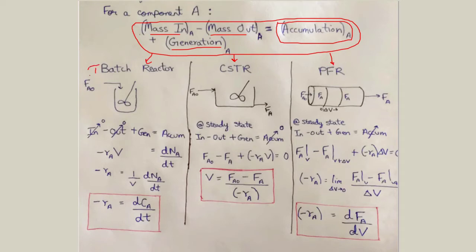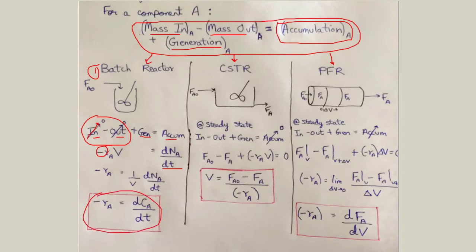Let's begin with the batch reactor. Using the component balance — in minus out plus generation equals accumulation — in a batch reactor we don't have any flow in or out, so those two terms become zero. The rate of generation equals the rate of accumulation, but since A is a reactant it gets consumed, hence the negative sign. Finally we get dCA/dt equals the rate of consumption of A.